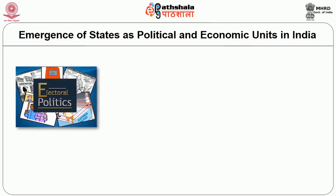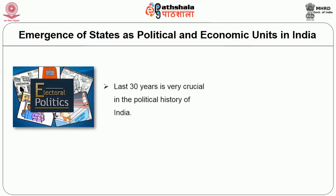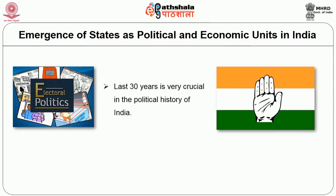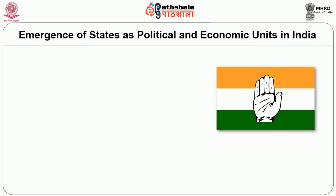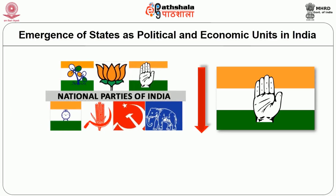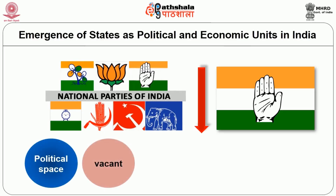Indian democracy is increasingly becoming an electoral democracy. In fact, Sunil Khilnani argues that Indian democratic politics and electoral politics have become synonymous. The last 30 years has been very crucial in the political history of India. With the breakdown of the Congress party as the dominant party — Congress was dominant from 1947 to 1967 — over the period since 1967, Congress has not really retained the kind of social coalition it had earlier. With the decline of Congress, all other national parties have also declined, with the exception of maybe BJP. With the decline of national parties, the political space has been filled up by state parties.